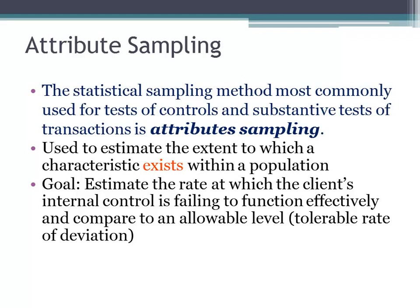You want to estimate the rate that internal controls might not be operating effectively, and compare that to your tolerable rate of deviation. The difference with accounts is that you have a tolerable misstatement — that's a dollar amount. With attribute sampling, you have to determine what your tolerable rate of deviation is: how much are you willing to accept that this control is not operating effectively? What percentage? Do you want controls in a 95% range or a 90% range? That tolerable rate of deviation, just like tolerable misstatement, is based on the auditor's judgment.